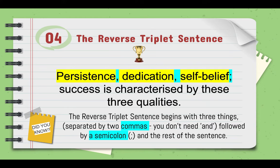Number four is the reverse triplet sentence. As you can imagine, this places the list of three things at the start of the sentence instead of at the end. So instead of 'persistence, dedication, and self-belief' at the end, we move them to the front: 'Persistence, dedication, self-belief; success is characterized by these three qualities.' You need commas between the list items and a semicolon after the third item before your main statement.